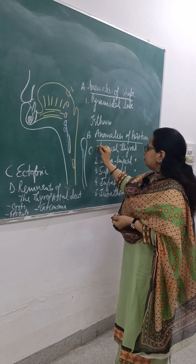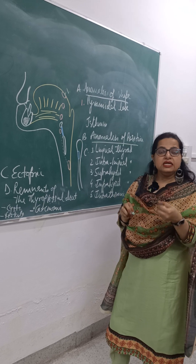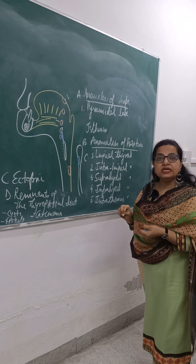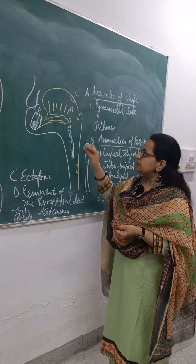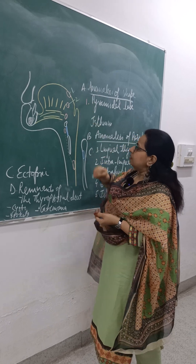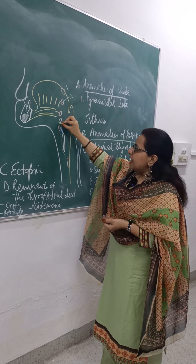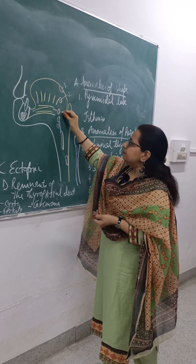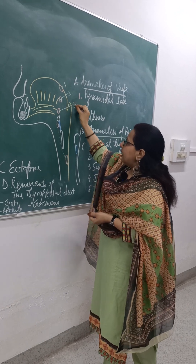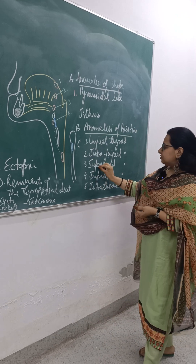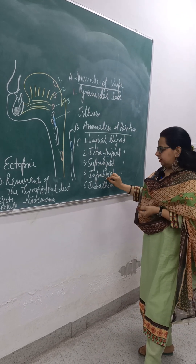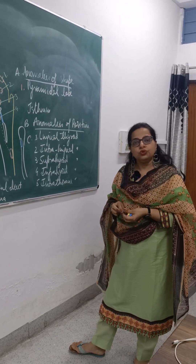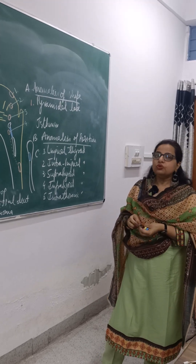The thyroid tissue may be intralingual — that is, present within the substance of the tongue — then it is known as intralingual thyroid. It may be present above the hyoid bone, known as supra-hyoid thyroid, or below the hyoid bone, known as infra-hyoid thyroid. This thyroid tissue may also be present in the thoracic region, in which case it is known as intrathoracic thyroid.